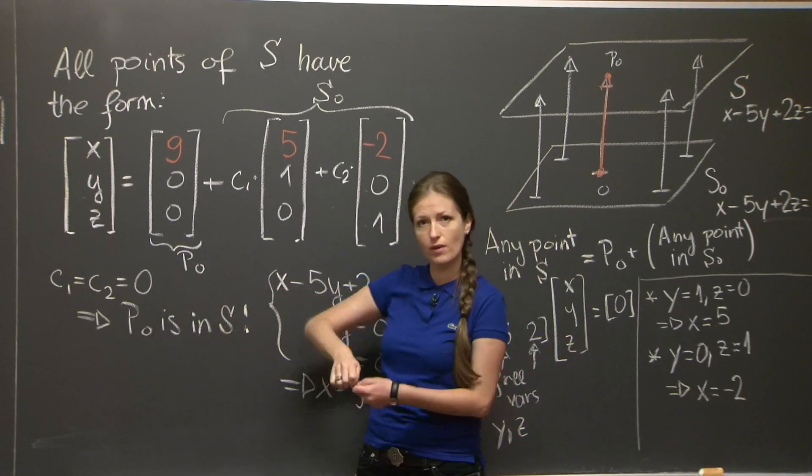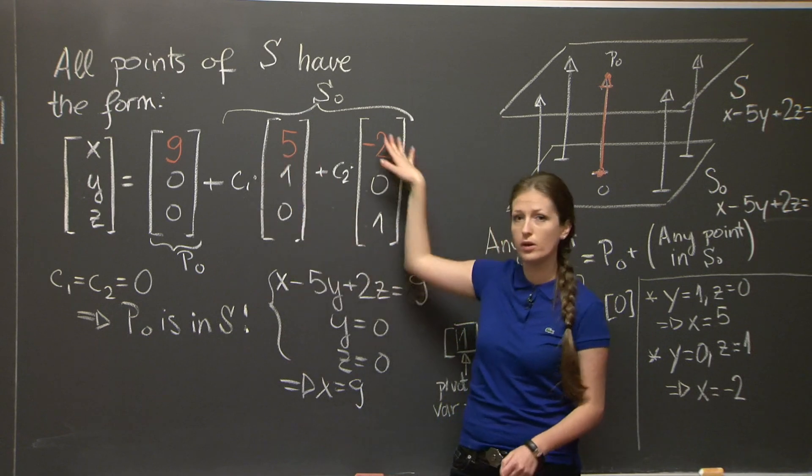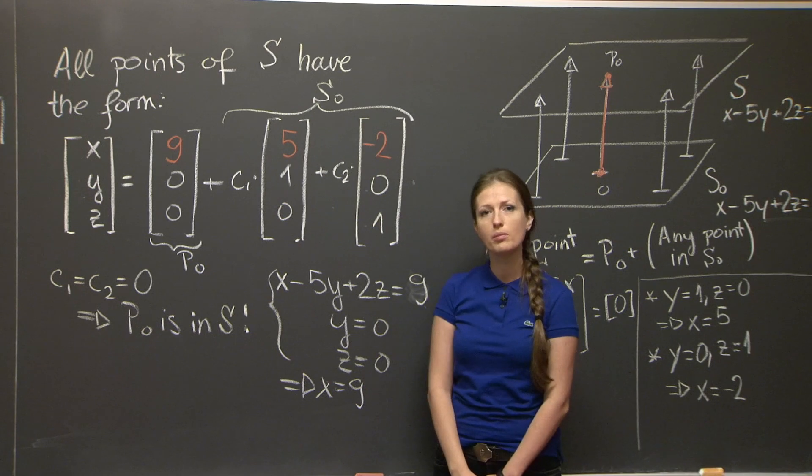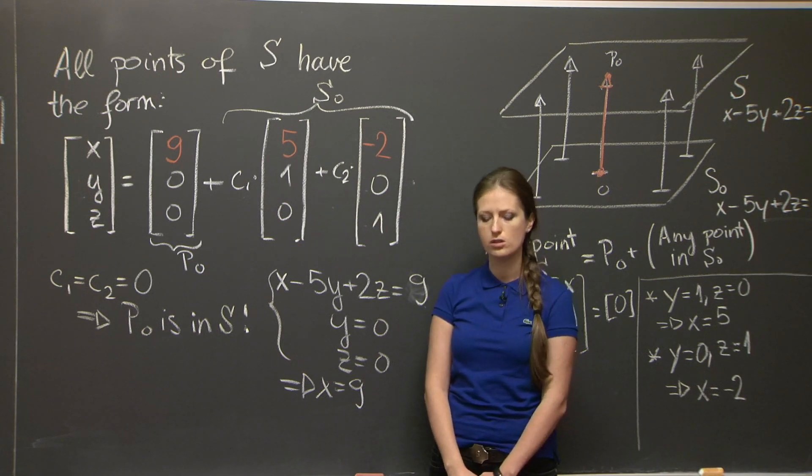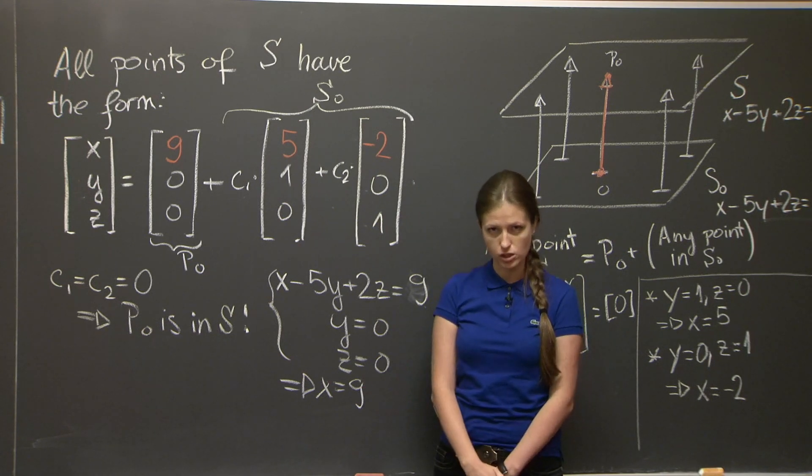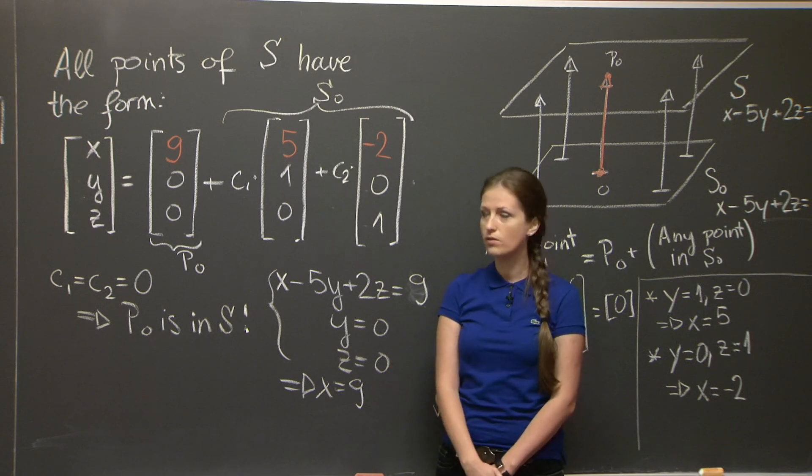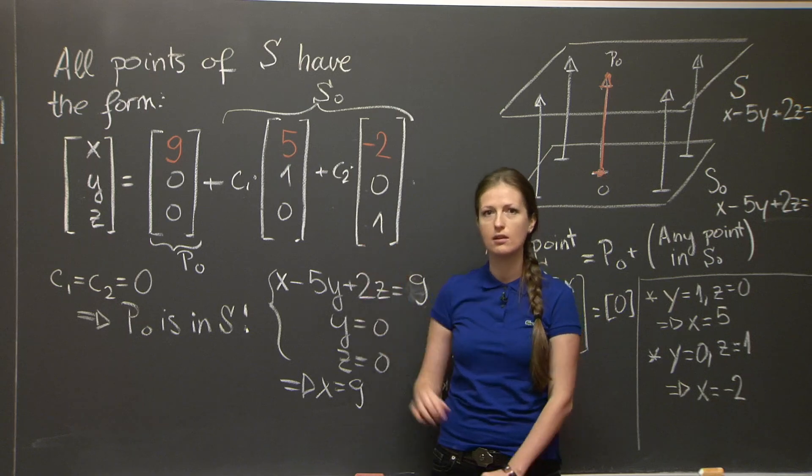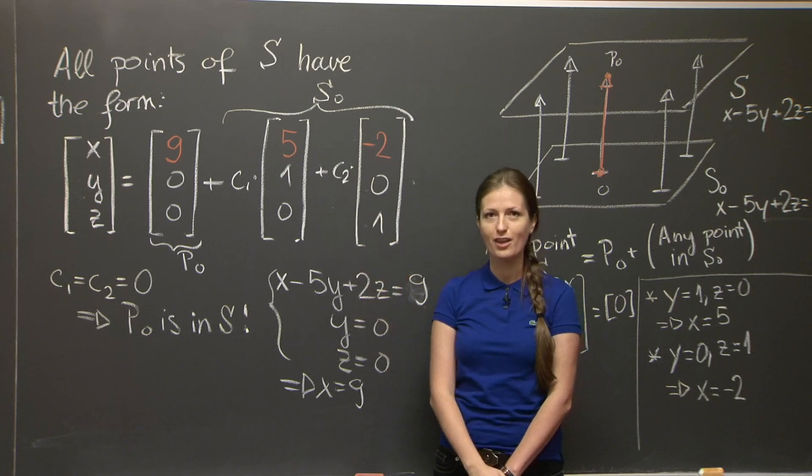It's go up this vector and then add a point in S₀, in the parallel plane that passes through the origin. This finishes our problem, but what I would encourage you to do now is to go on to the next lecture, watch the next recitation video, and then come back here and think about what is it that we really did here on this half of the board. Thank you.